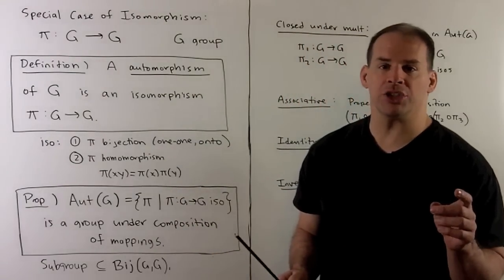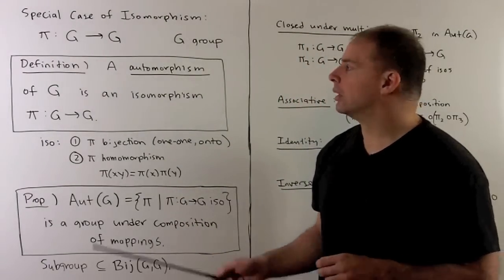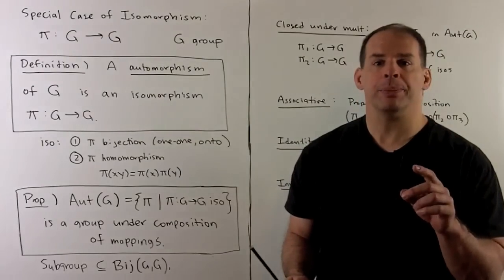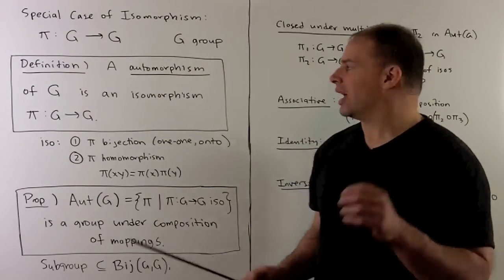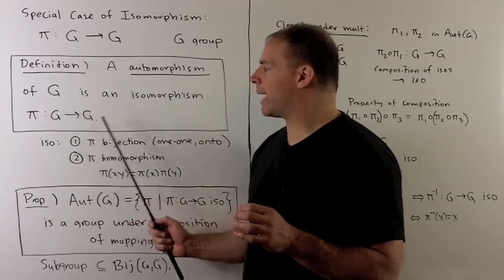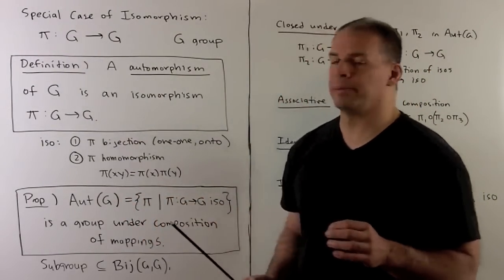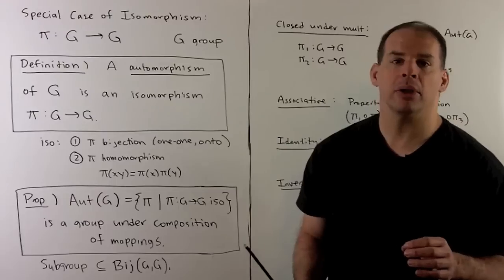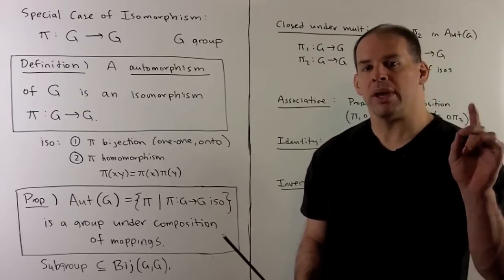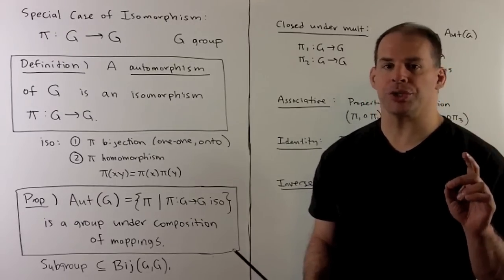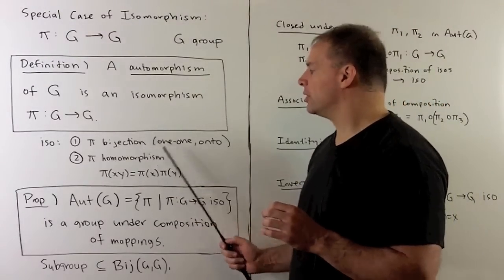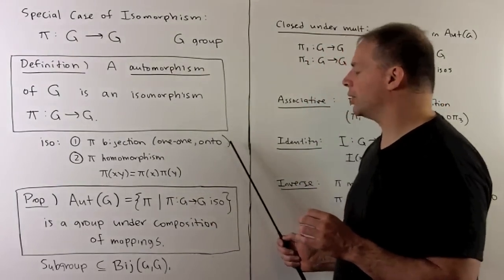Definition: an automorphism of our group G is an isomorphism pi carrying our group back to itself. Recall, for an isomorphism we have two features. First, pi is a bijection — one-to-one and onto.